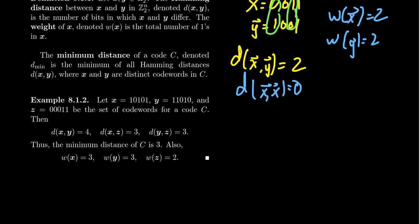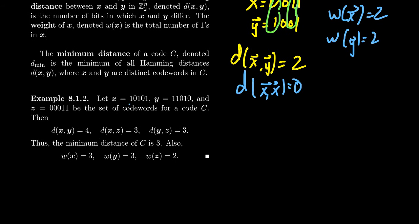All right. And so here's some more examples. If I take the code words 10101, and then 11010, and then 00011, right? We can see the weights of these things very easily. The weight of X is 3. Y is likewise 3. Z is 2 in this situation. What's the distance between them?